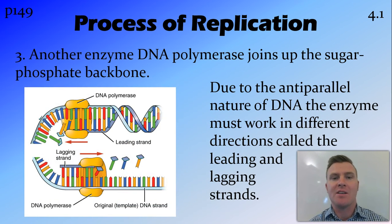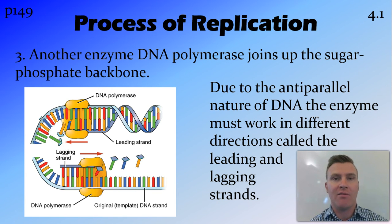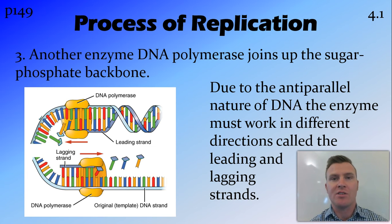Then another enzyme called DNA polymerase goes along the two strands of DNA and joins up the sugar phosphate backbone to complete the replication. And due to the anti-parallel nature — so that's the 3' to 5' nature of DNA — the enzyme needs to work in different directions on each one of the strands.